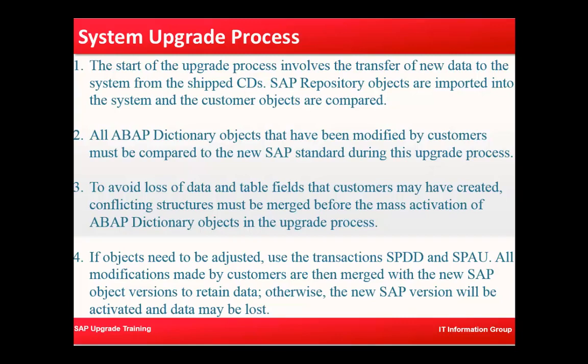To avoid loss of data and table fields that customers may have created, conflicting structures must be merged before the mass activation of ABAP dictionary objects in the upgrade process. For example, for a default program supplied by SAP, there are fields which don't meet a customer's requirements and the customer adds fields to it. During an upgrade, the upgrade product will not have those fields, so we need to look at merging them. We need to use transaction SPDD or SPAU depending on where we are.